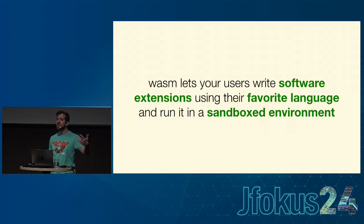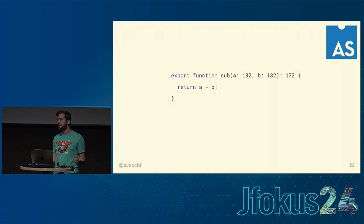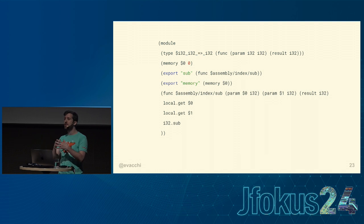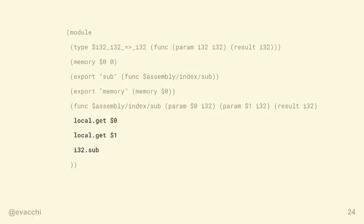How does WebAssembly look? This is an example using AssemblyScript, which is basically a dialect of TypeScript — you'll recognize the familiar syntax, Java-like, Kotlin-like. We're just doing a subtraction — a very basic example. The reason it's simple is to show how it gets compiled into WebAssembly. It's a stack machine: you get an argument, put it on the stack, then the other parameter, put it on the stack, and then subtraction pops two elements from the stack and pushes the result back. If you're familiar with Java bytecode, this is fairly similar.